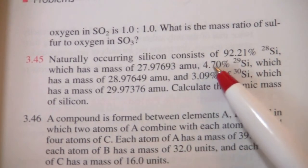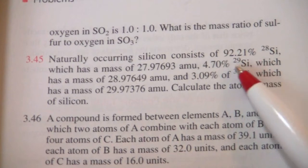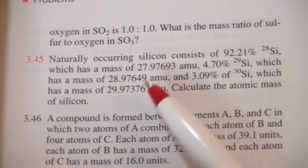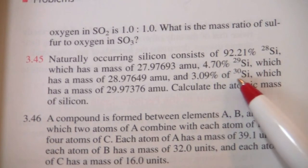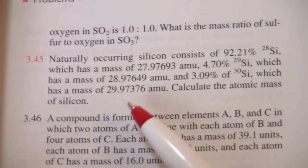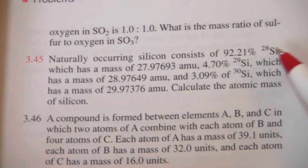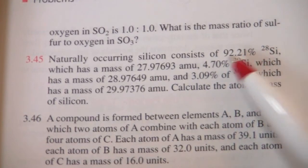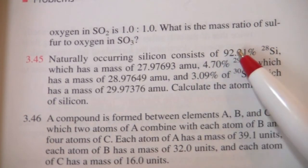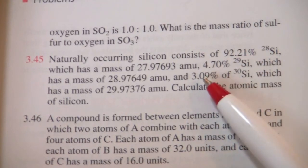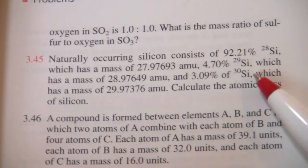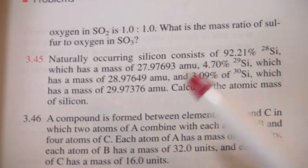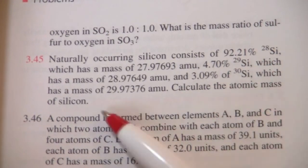And then there's also 4.7% that is silicon-29 and has this mass, 3.09% is silicon-30 which has this mass. So we have three different isotopes, three different abundances which incidentally must add up to 100%, and then we have the mass of each of those three isotopes so we can calculate the atomic mass.